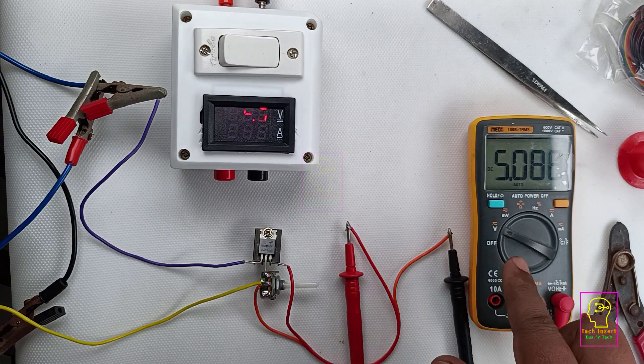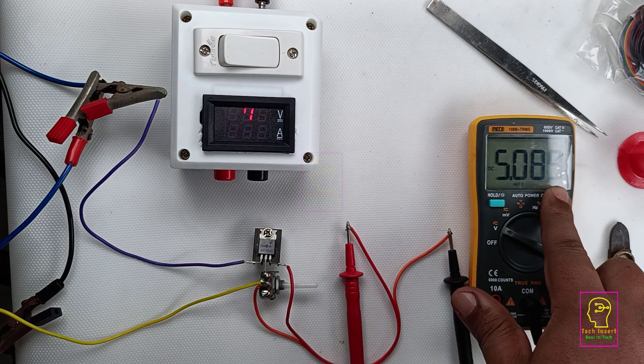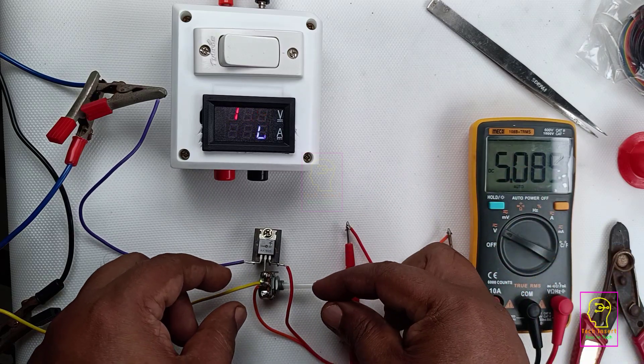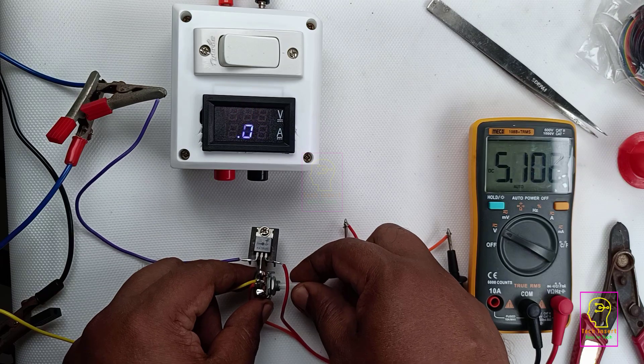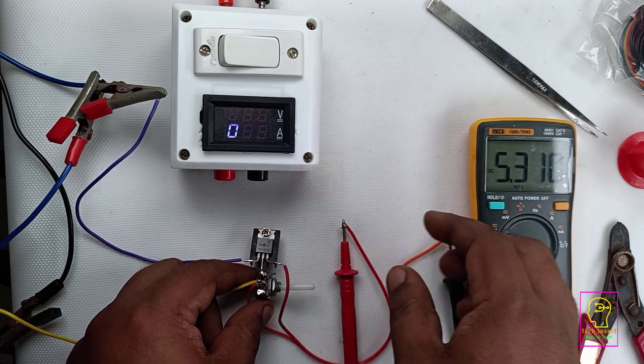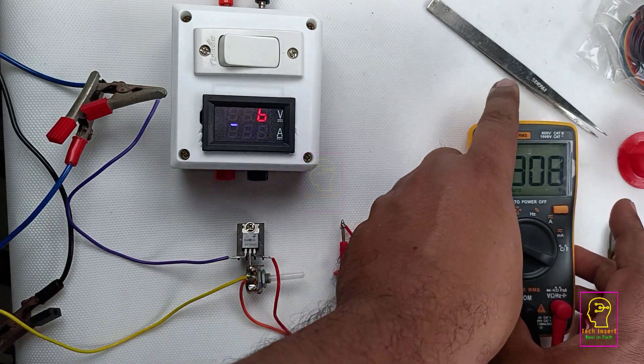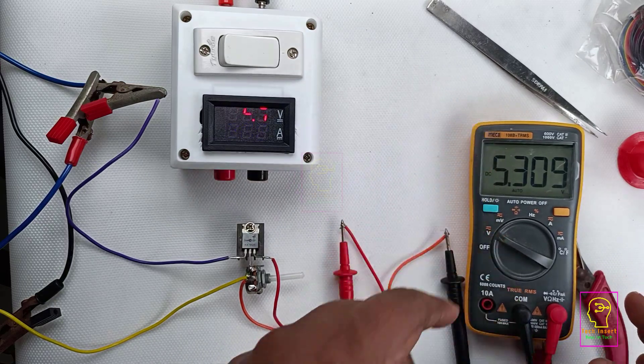So the output will be minimum 4.8 to 5.2 volt, something in between. Now I will change the value of the variable resistance. You can see the voltage will be varying. Yeah, it is going higher. There is some glare in the multimeter display. I will raise the right side a bit high.